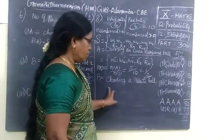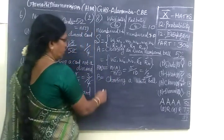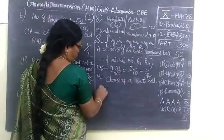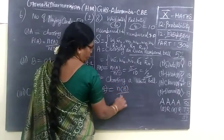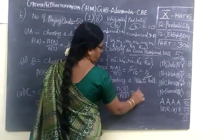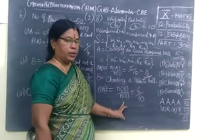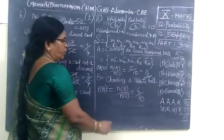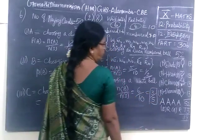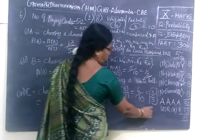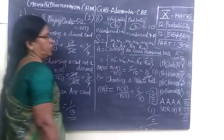Next we are selecting a white card. How many white cards do we have? 6. So P of B equals N of B by N of S — that is 6 by 10. N of S is always the total number. So if we cancel, you get it as 3 by 5. So this also covers 2 more questions. Thank you.